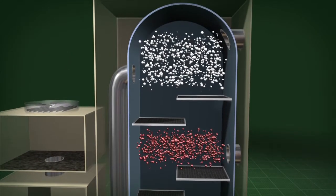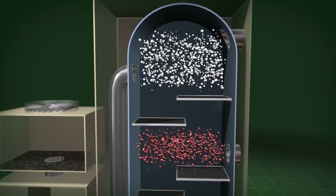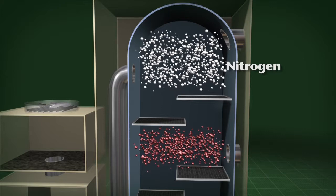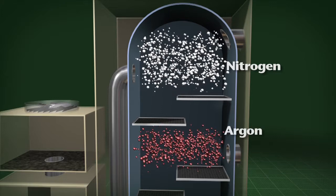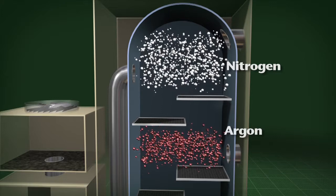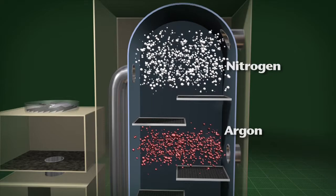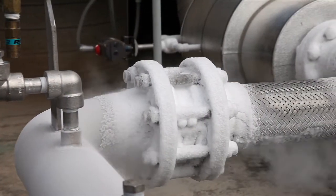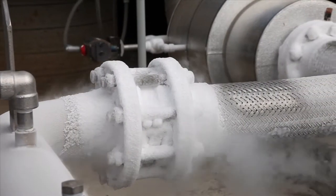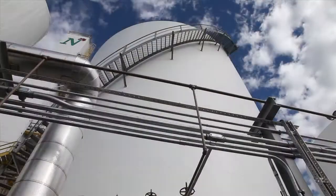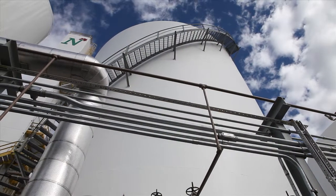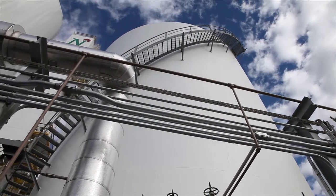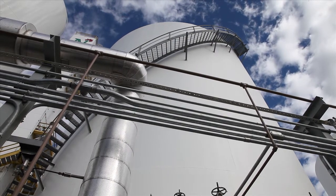At minus 297 degrees Fahrenheit, nitrogen and argon remain gases. But the lighter nitrogen molecules rise to the top of the separation chamber, and the slightly heavier argon molecules float in the middle of the chamber. Each is siphoned off separately and purified further before it's liquefied and stored in large tanks.